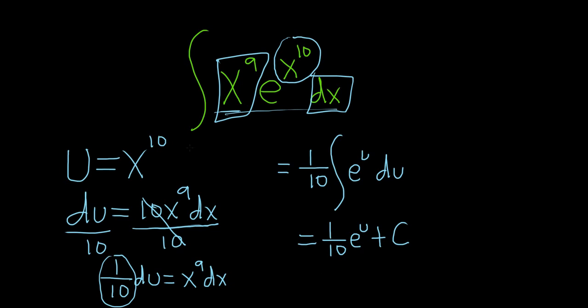And u was x to the tenth. Good stuff. So this is 1 tenth e to the x to the tenth plus our C. And that is the final answer. I hope this video has been helpful.